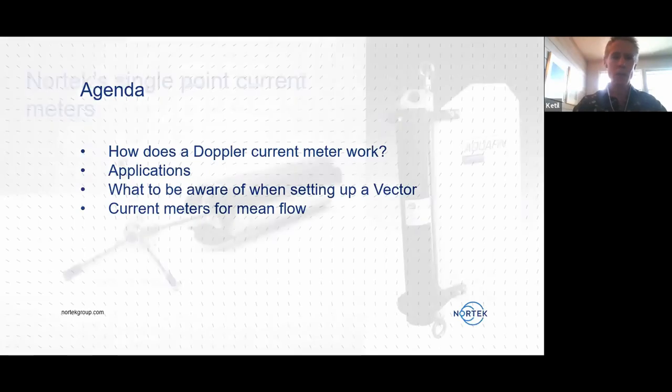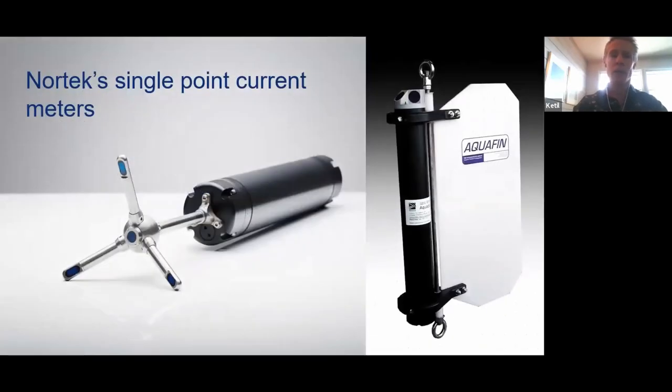Now, if we move to the two types of single point current meters that Nortek make, we see this in this slide. On the left hand side, we see what we call a vector, which is a type of sensor that's called an acoustic Doppler velocimeter.